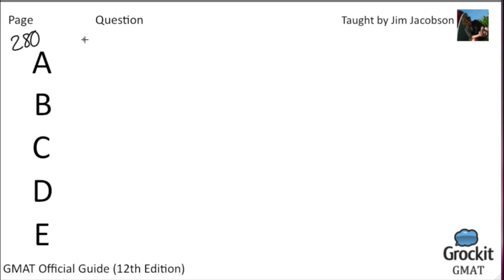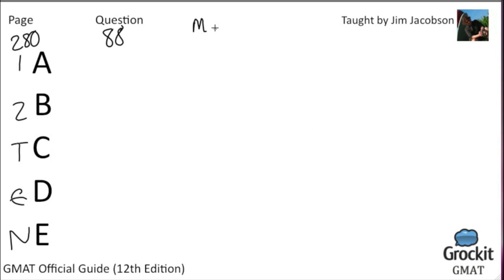Page 280, question 88. Last year, if Arturo spent a total of $12,000 on his mortgage payments, real estate taxes, and home insurance, how much did he spend on real estate taxes? We call M his mortgage payments, R his real estate taxes, and H his home insurance. Those three together equal $12,000. We want to know what R equals. Three variables in one equation is not going to be enough — let's see what the statements give us.